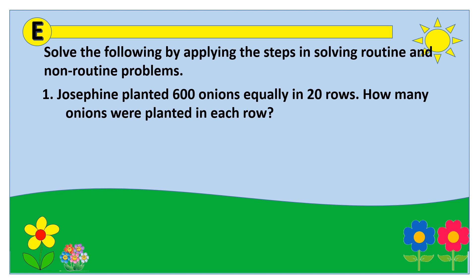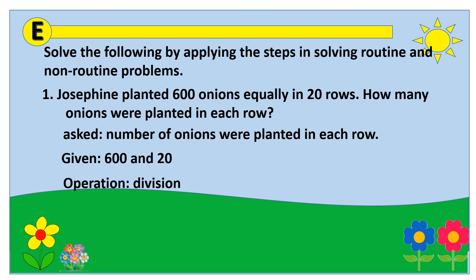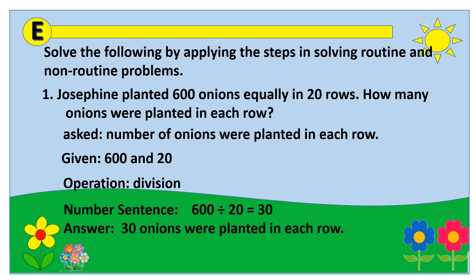Let us analyze again — the problem asks for the number of onions planted in each row. The given fact is 600, and the operation is division. So the number sentence is 600 divided by 20 equals 30. The answer is 30 onions were planted in each row.